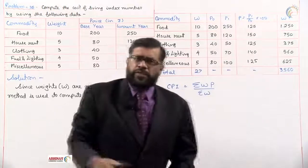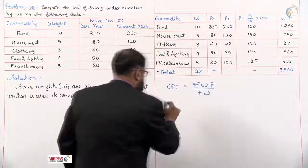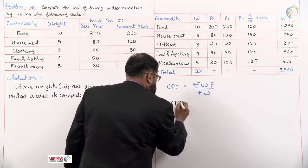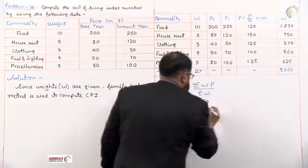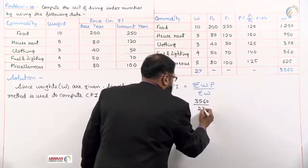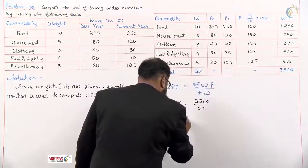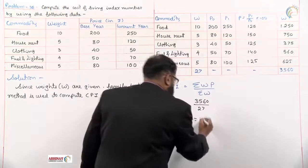Once this is done, use it in the formula. Consumer price index number: summation wp, 3560, divided by 27. So the final answer, consumer price index number when you divide is 131.85.